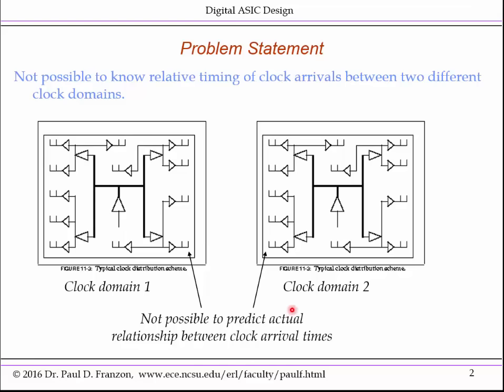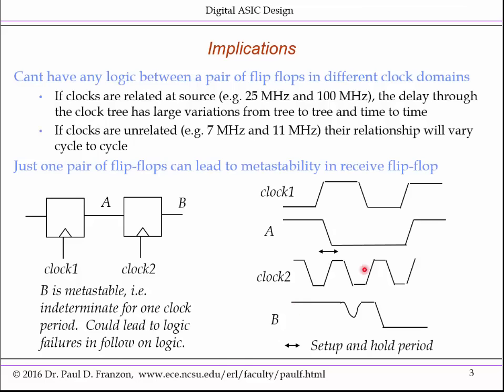You simply don't know it at all. Even if the clocks are related by some common factor, that large variation in delay from clock tree to clock tree means you won't know what the actual phase is for any particular set of process conditions or temperatures. Furthermore, sometimes the clocks might be unrelated. If you pick two prime numbers, their relationship will furthermore vary cycle to cycle, because one clock will continuously overtake the other clock.